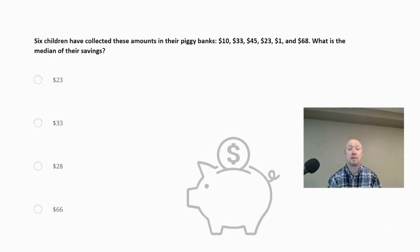Six children have collected these amounts in their piggy banks: $10, $33, $45, $23, $1, and $68. What is the median of their savings? Okay, so we need to identify that we want the statistic median. So we need to know what a median is. So the median is the middle value in a set of data. But in order to determine the middle value, we have to put this in order from smallest to biggest.